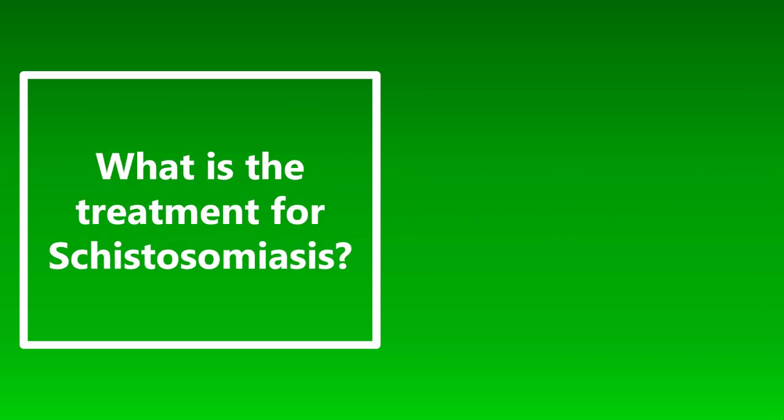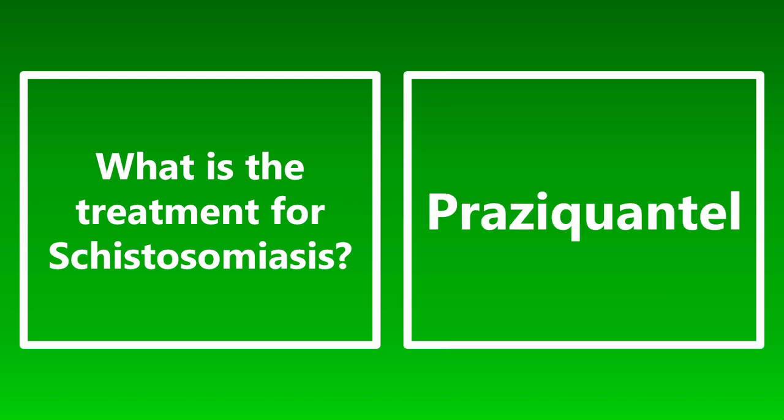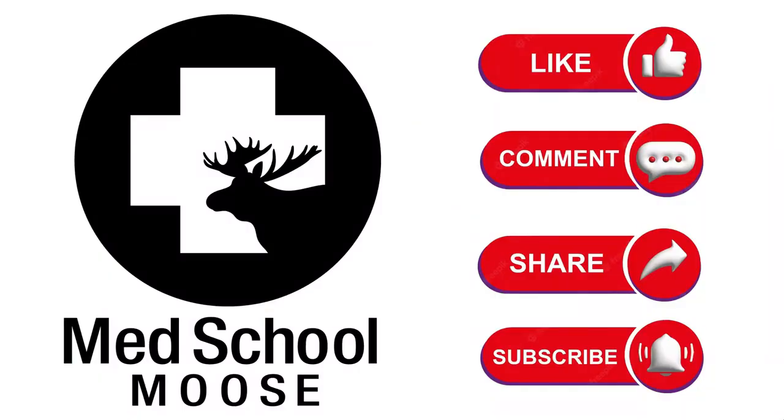What is the treatment for schistosomiasis? It's going to be praziquantel. This is a parasitic infection caused by flatworms, not seen much in real life, but very high yield and testable for the boards. Schistosomiasis is treated with praziquantel.